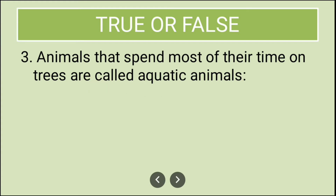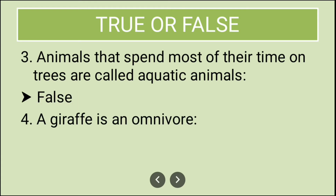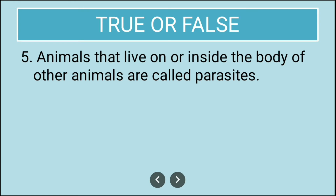Next: animals that spend most of the time on trees are called aquatic animals — this is false. They are called arboreal animals. Next: a giraffe is an omnivore — this is false, as a giraffe is herbivorous. And finally: animals that live on or inside the body of other animals are called parasites — this is true.